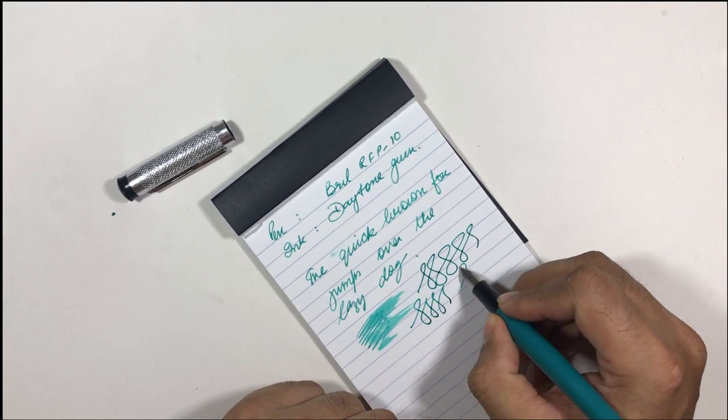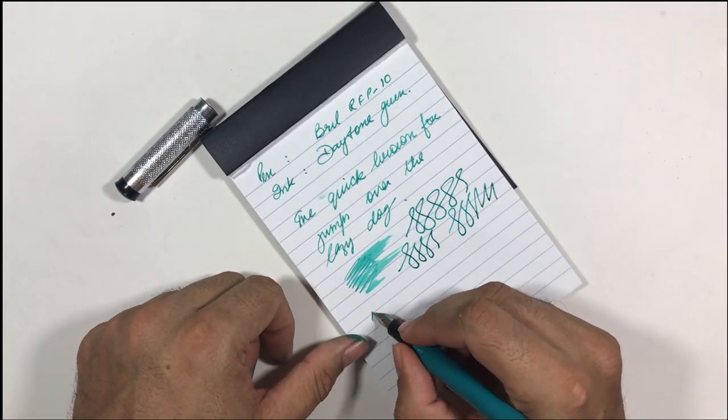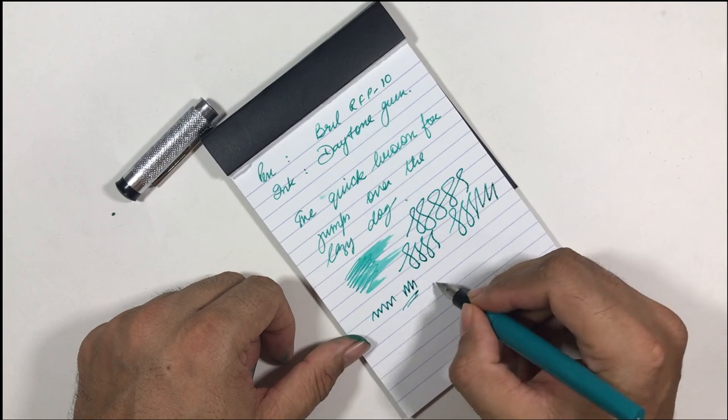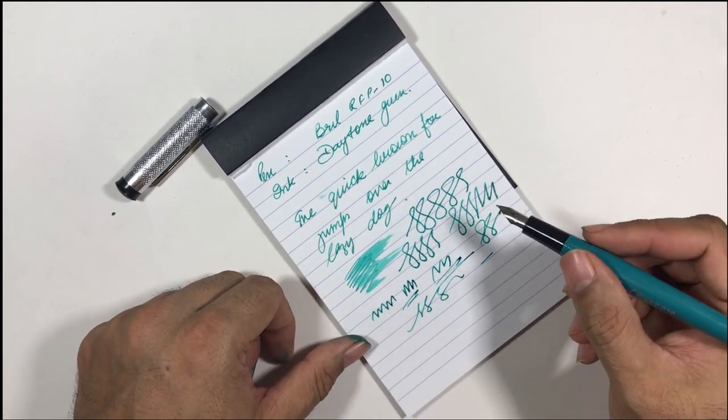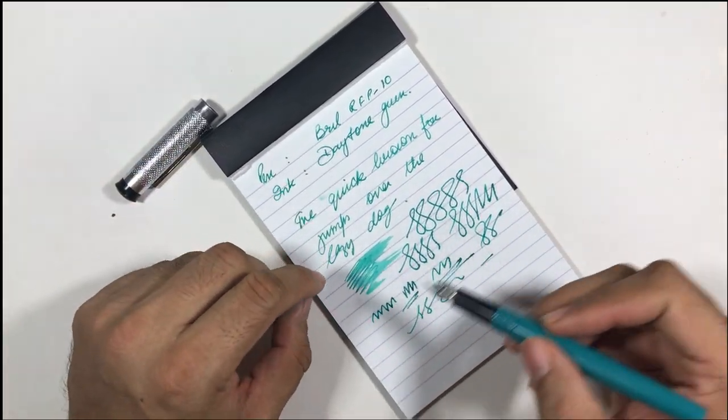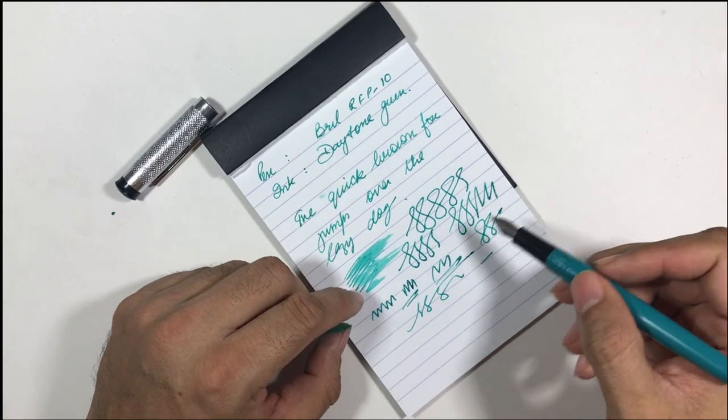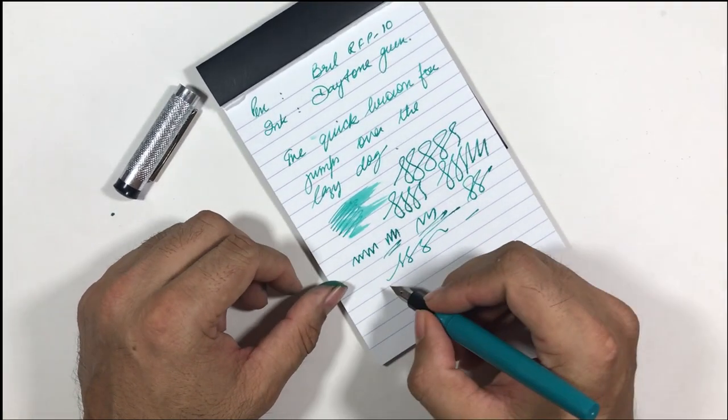This pen does not have any flex - totally steel nib, hard nib. The nib point is medium, yes it is a medium nib. It's not a scratchy nib but you get a nice feedback when you run the pen on the paper.